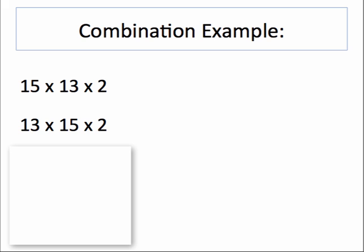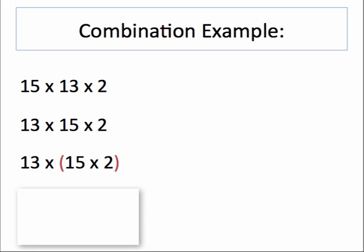First let's switch and commute or move 13 and 15 using the commutative property. Now I don't want to multiply that combination, but if I look at 15 multiplied by 2, I'm going to end up in a number that is base 10. So I can associate those two numbers first and use 15 times 2, which gives me 30. Now I have a number that ends in zero.